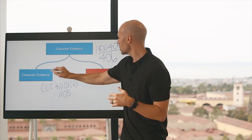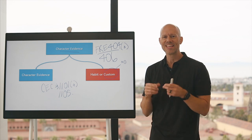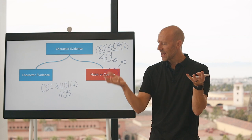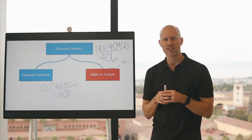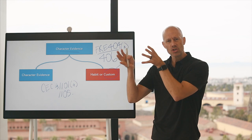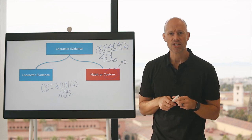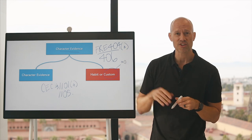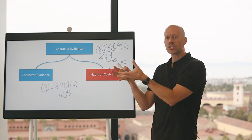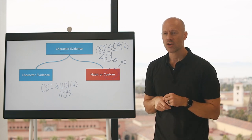This is the first issue we want to consider. The distinction between character evidence on the one hand and habit evidence on the other is not always obvious. When you think about issues of evidence, they're essentially decisions that judges make under an abuse of discretion standard. So what might be character evidence to one judge may be habit evidence to another.